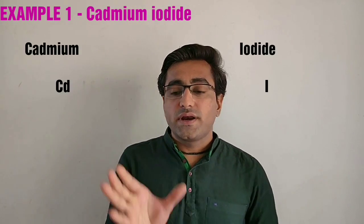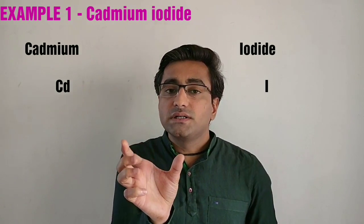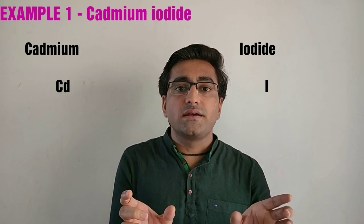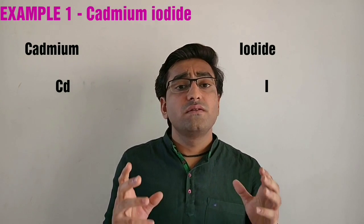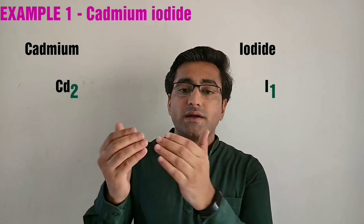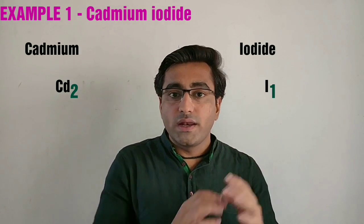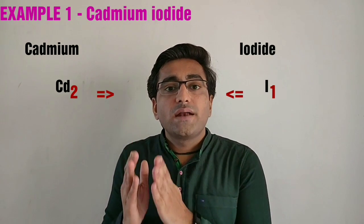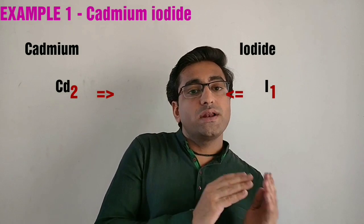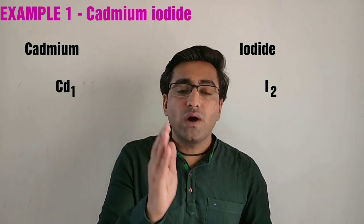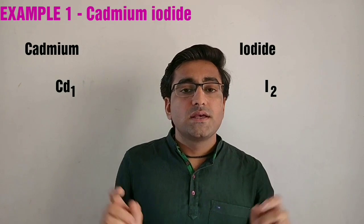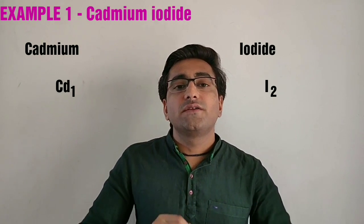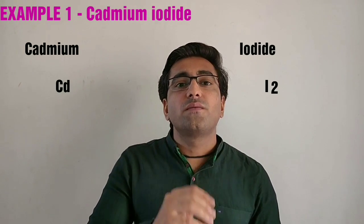Keeping these three steps and three rules in mind, let us take an example of Cadmium Iodide. Step one: write the symbols — Cadmium's symbol is Cd, Iodide's symbol is I. Step two: write their valencies — Cadmium's valency is 2, Iodide's valency is 1. Step three: criss-cross — Cadmium's 2 goes below Iodide, and Iodide's 1 goes below Cadmium, giving us Cd₁I₂. As per the rule, we don't write the subscript 1, so the final answer is CdI₂, which is the formula for Cadmium Iodide.